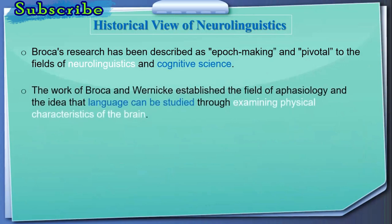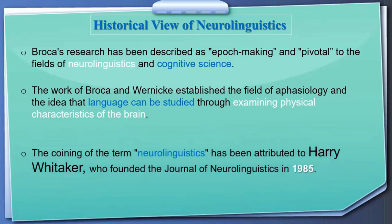The work of Broca and Wernicke established the field of physiology and the idea that language can be studied through examining physical characteristics of the brain — that language deficiencies may correspond to physical injury or damage. The coining of the term 'neurolinguistics' has been attributed to Harry Whitaker, who founded the Journal of Neurolinguistics in 1985.